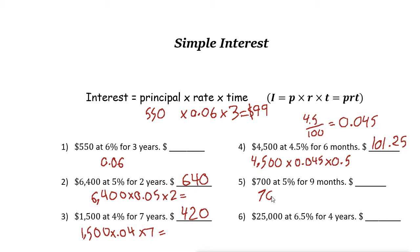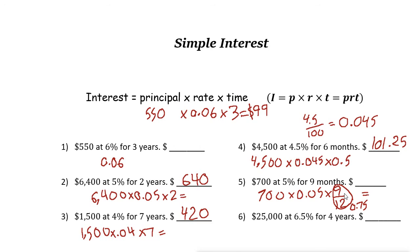Next: seven hundred dollars at five percent — that's 0.05 — and the time is nine months. Nine months is nine over twelve, which as a decimal is 0.75. Use your calculator: seven hundred times 0.05 times 0.75. The answer — the interest at five percent for nine months — is twenty-six dollars and twenty-five cents.